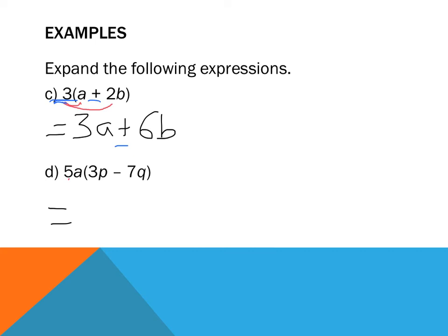Now I've got a number and a pronumeral on the outside multiplying more numbers and pronumerals. Deal with the numbers first and the pronumeral second. 5a multiplied by 3p: 5 multiplied by 3 becomes 15, and I'm left with a and p, so that's 15ap. Then 5a multiplied by negative 7q: 5 multiplied by 7 is 35, and I'm left with a and q, so that's negative 35aq.